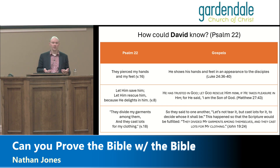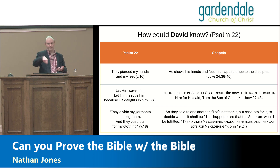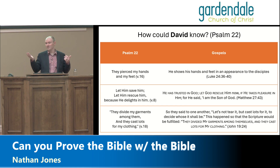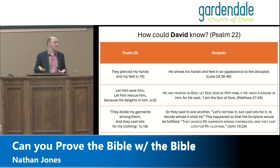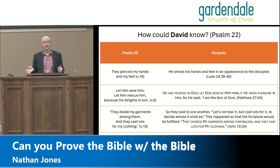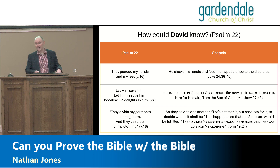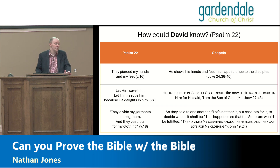A skeptic could say Matthew just tried to make the details fit what he read. But Matthew can't make up the crucifixion, David couldn't invent it, and Matthew couldn't invent the insults the religious elite hurled at Jesus or the way Roman guards treated prisoners — that was already existing reality. If he had invented it, their accounts would have been laughed away as fiction. So how could David know these things so far in advance? The most reasonable explanation is divine knowledge — God prophesied this ahead of time.